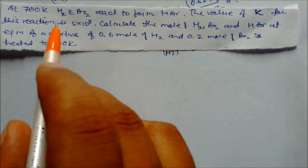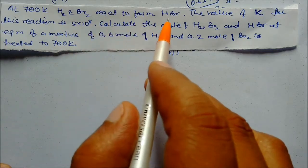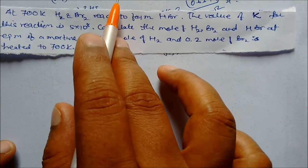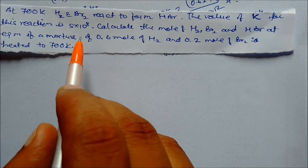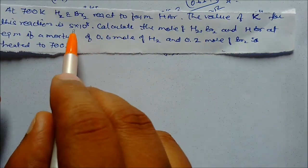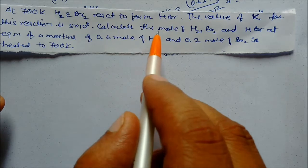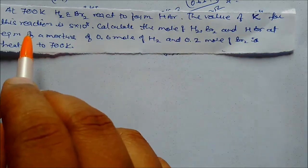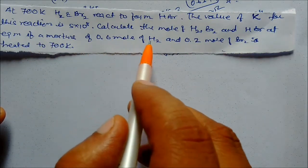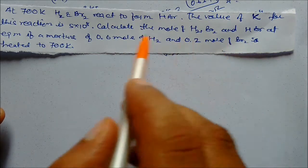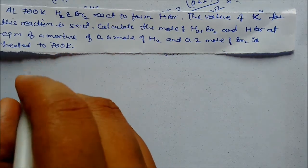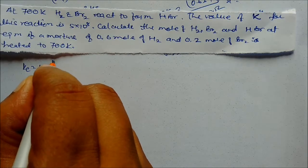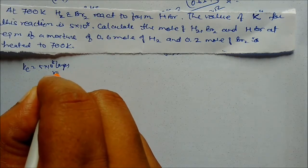At 700 Kelvin, hydrogen and bromine react to form HBr. The value of Kc for this reaction is 5 × 10⁸, which is a very large value. We need to calculate moles of H₂, Br₂, and HBr at equilibrium, given a mixture of 0.6 mol H₂ and 0.2 mol Br₂ heated to 700 Kelvin.